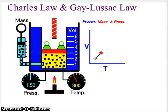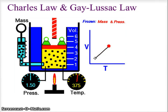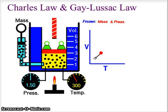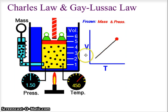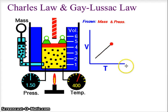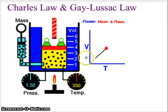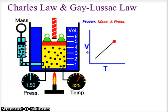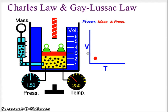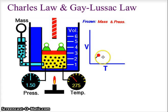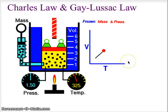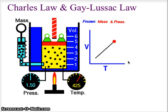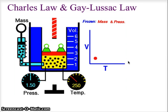Now again, for the Gay-Lussac Law, this would be exactly the same, except pressure would be on the y-axis and temperature on the x-axis. The relationship would still be linear and still a direct relationship: increase temperature, increase pressure; decrease pressure, decrease temperature.